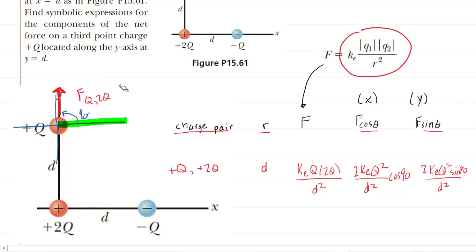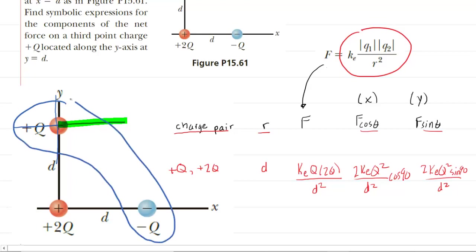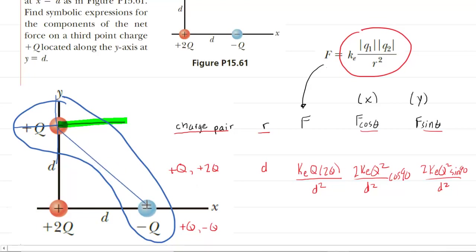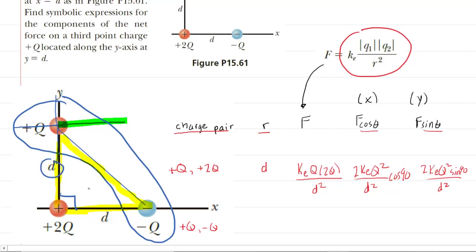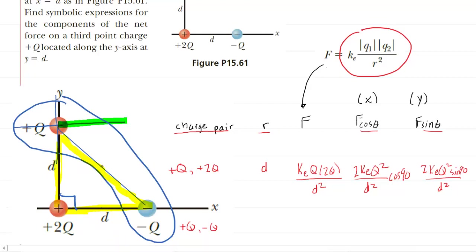Now let's consider a different charge pair: positive Q and negative Q. For that charge pair in our chart, we write positive Q and negative Q. The distance between those charges will need to be obtained using the Pythagorean theorem. Looking carefully at the figure, we have a right triangle outlined in yellow, and it's a right triangle with two equal legs, both marked D.